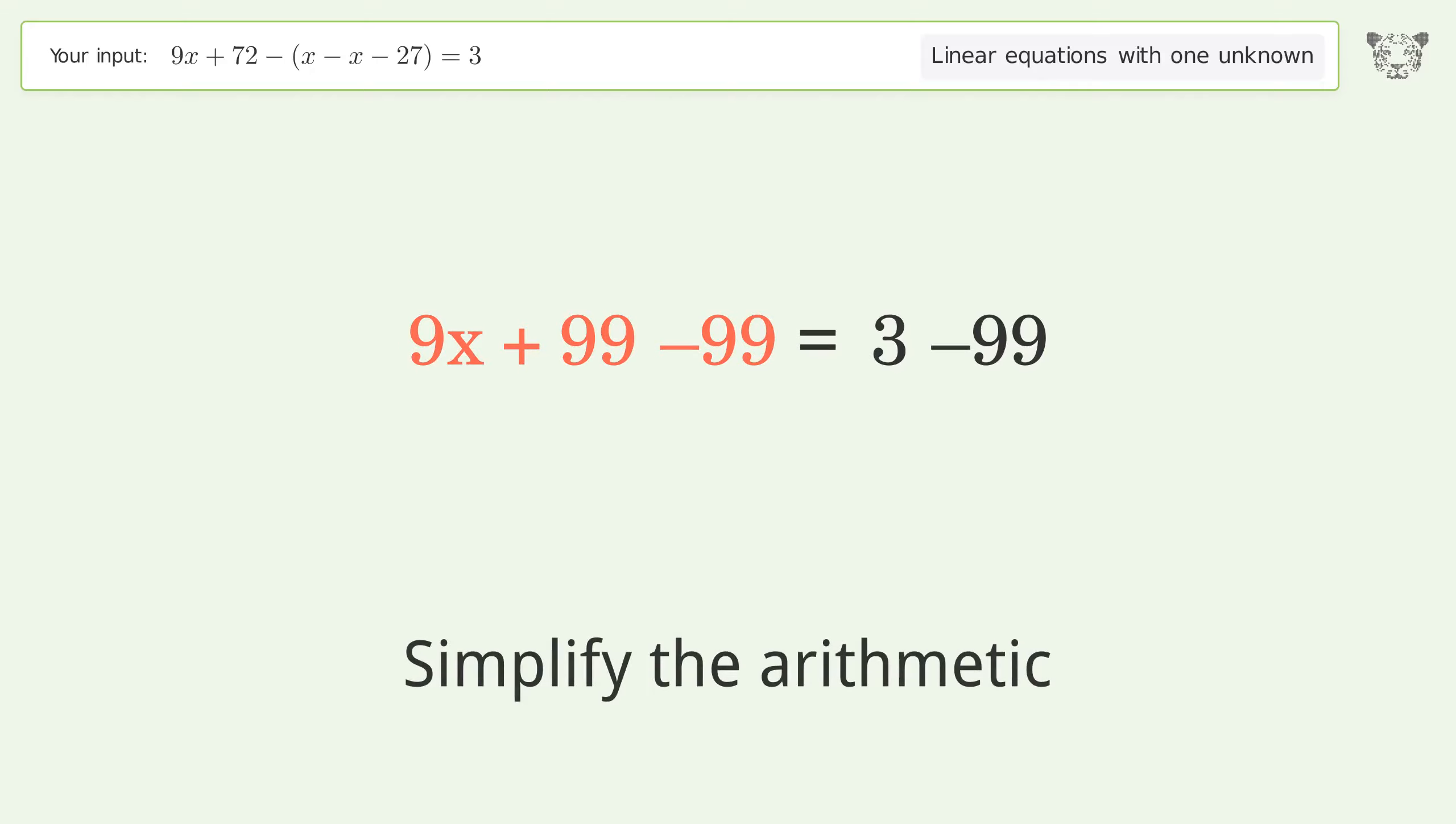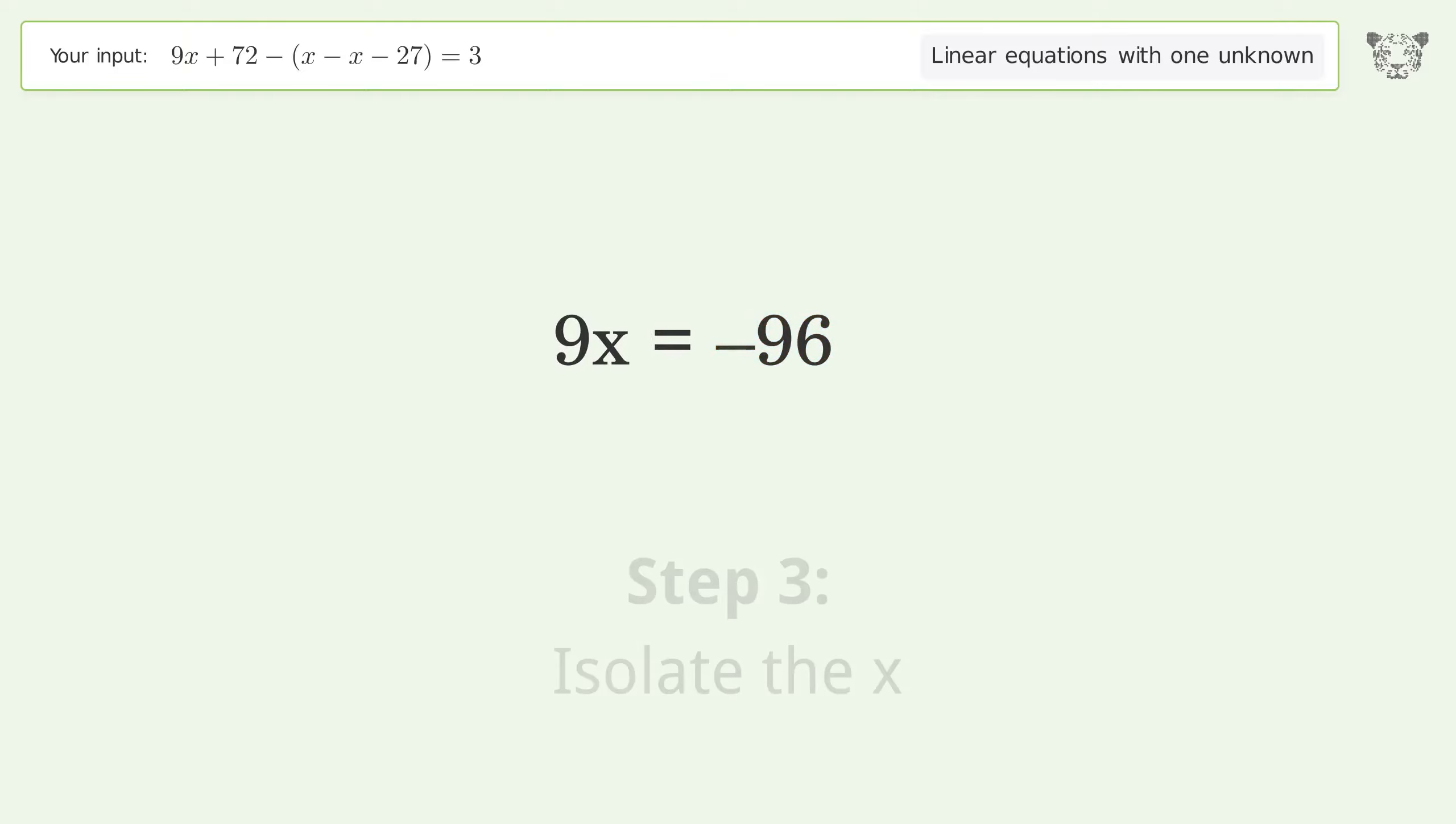Simplify the arithmetic. Isolate the x. Divide both sides by 9. Simplify the fraction.